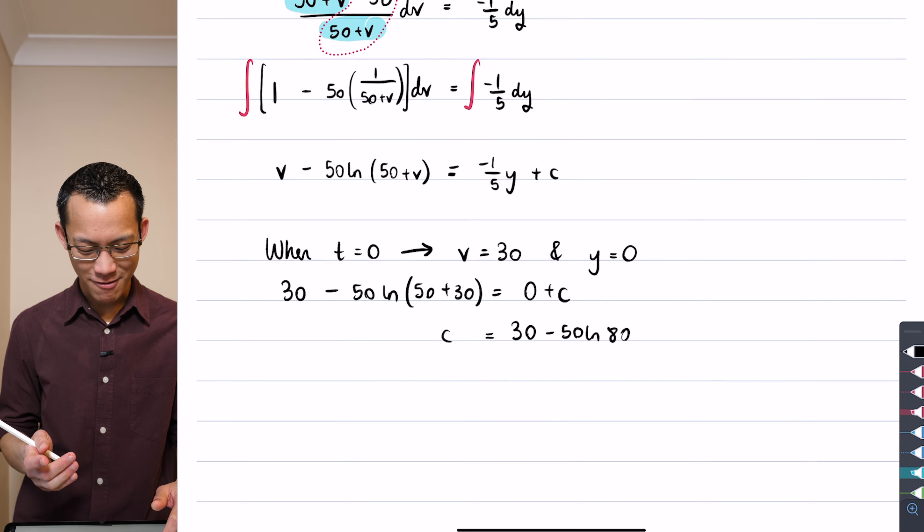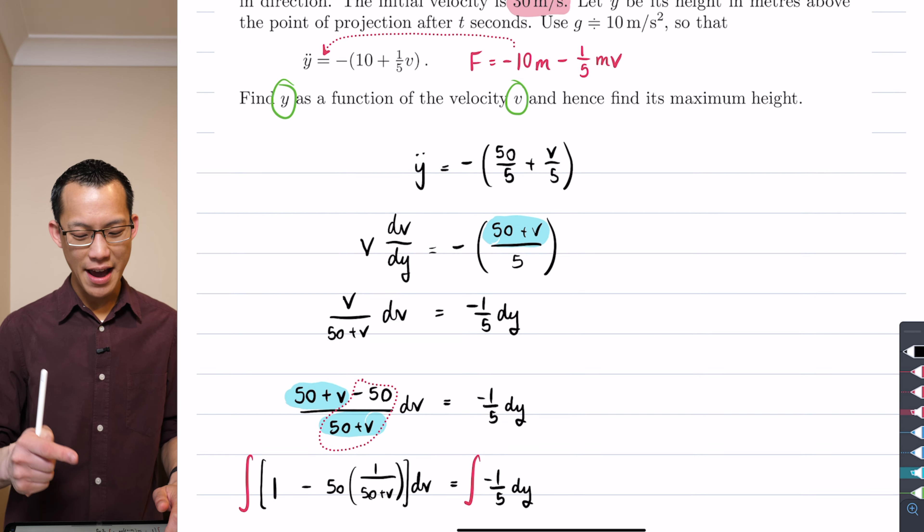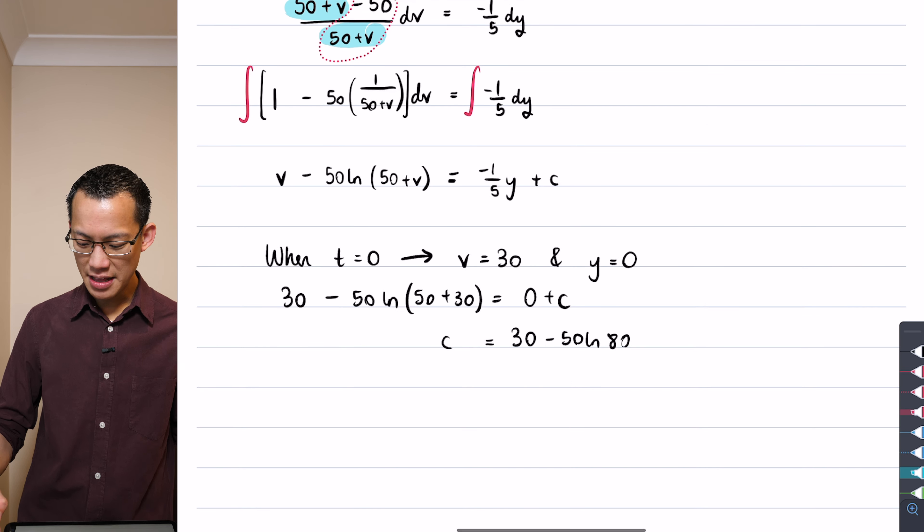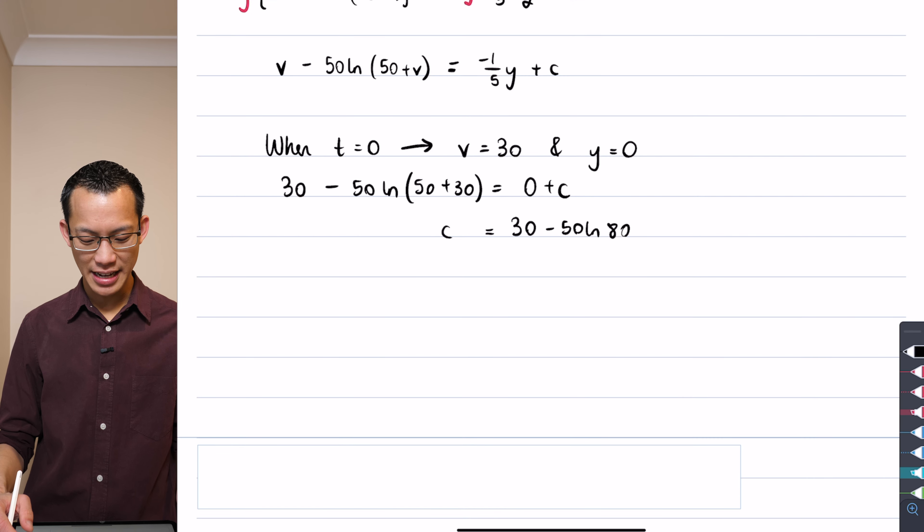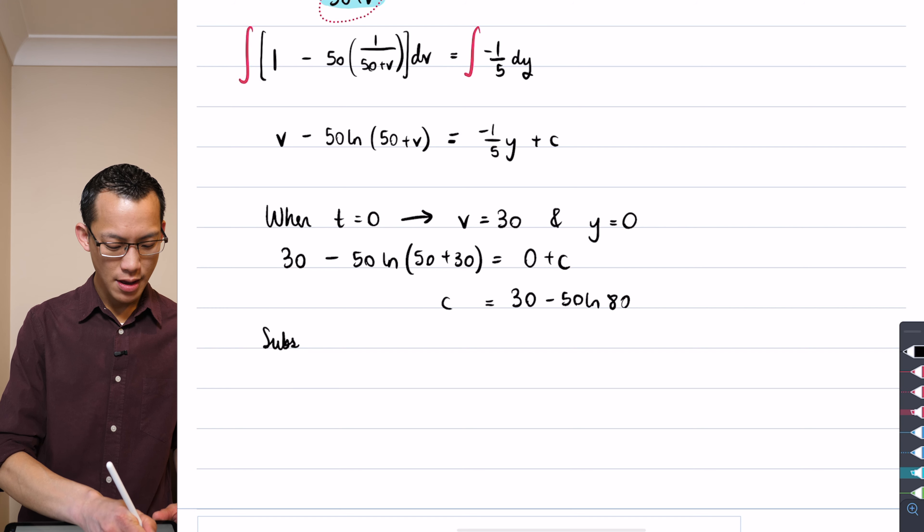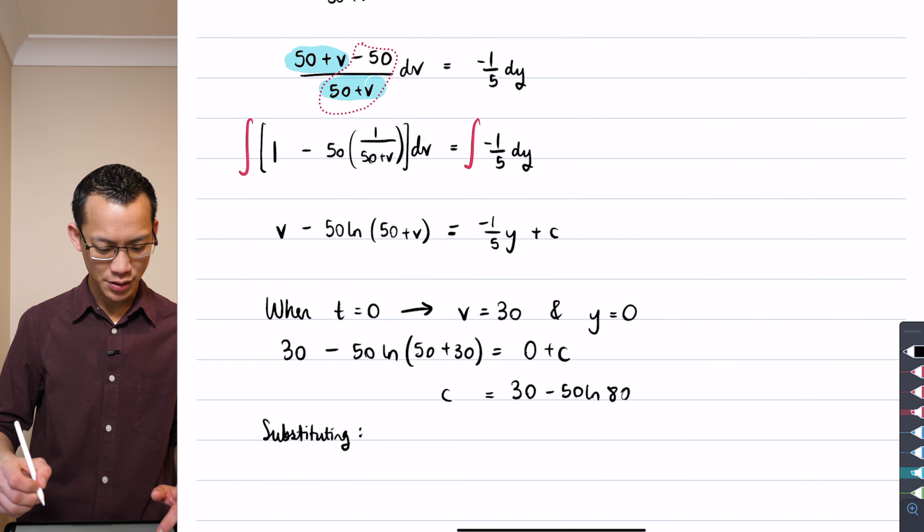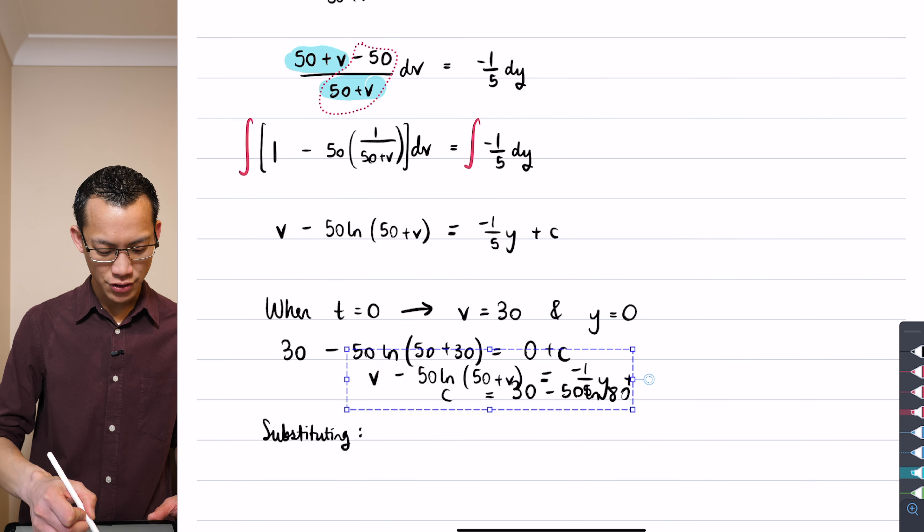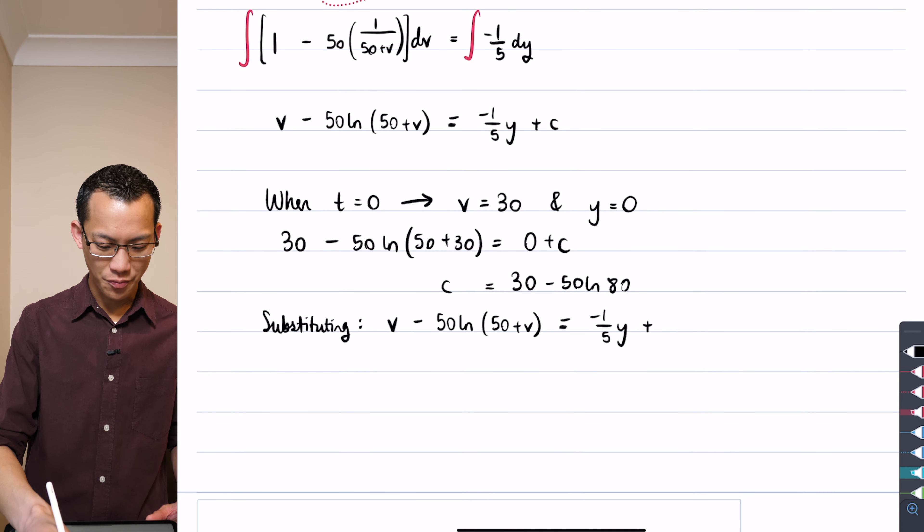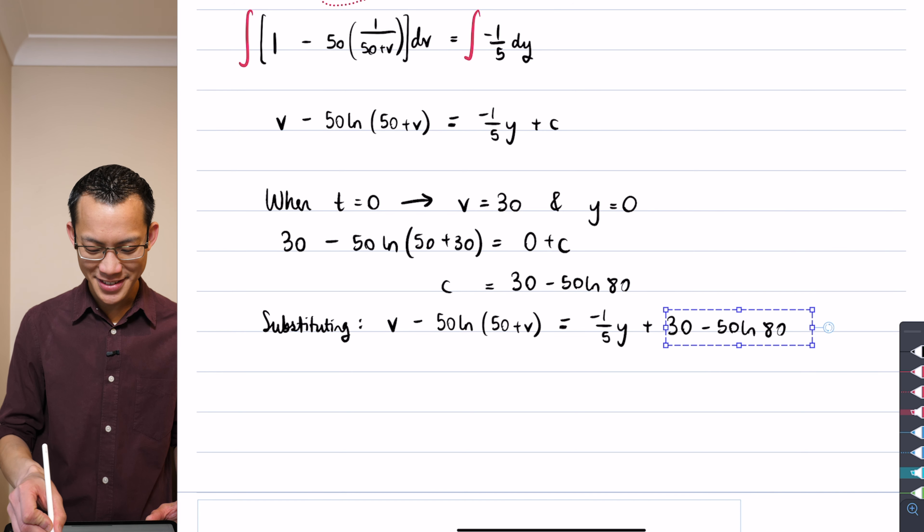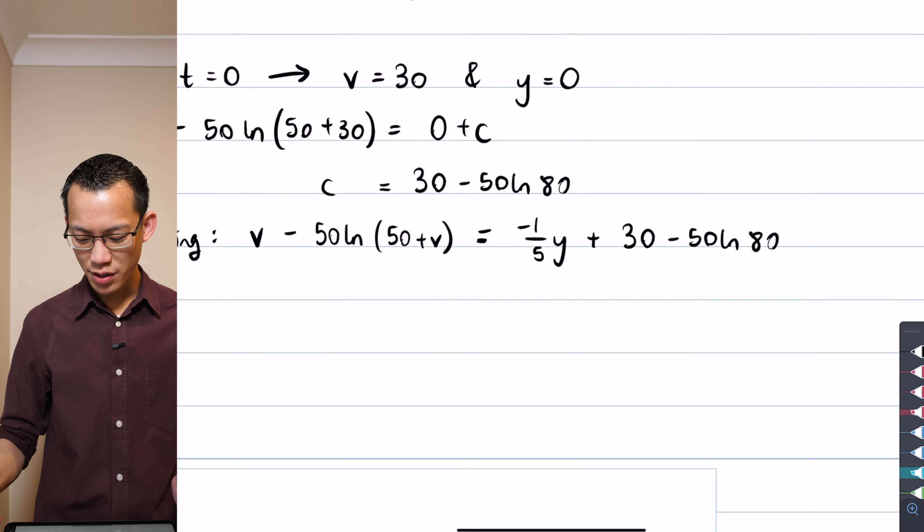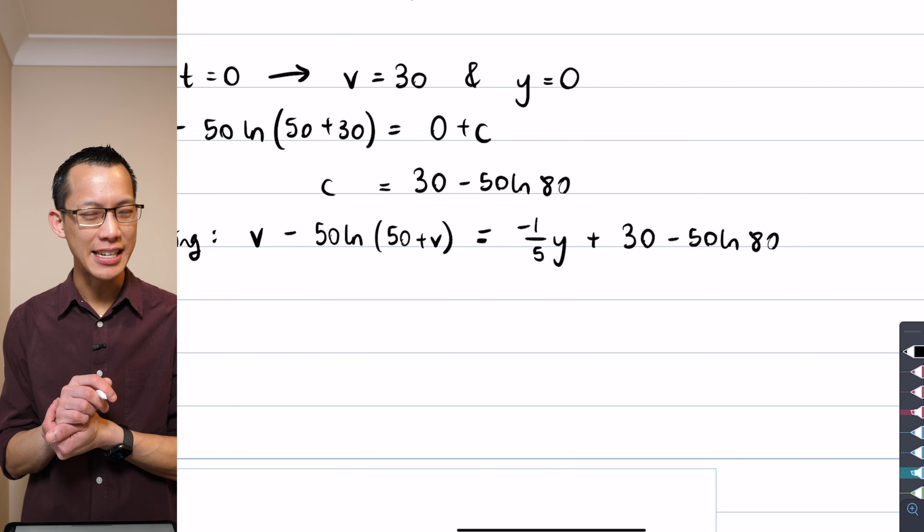Okay so I'm almost there. I've got my constant and remember the whole question was find y as a function of v, and you can see y is just hanging out there. So once I do my substitution there's just a little bit of algebraic manipulation required to actually get this answer. So let's substitute back in. I'm just going to take everything here, none of that changes, and then I'm going to add the constant of integration that I found, and now I just need to tidy up, make y the subject, and I'm going to use some of my log laws while I'm at it to try and make everything as neat and tidy as I can.